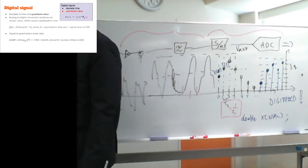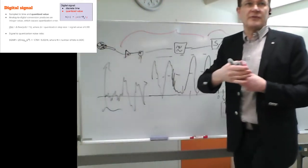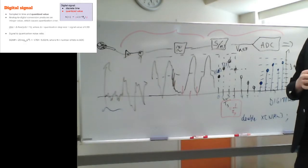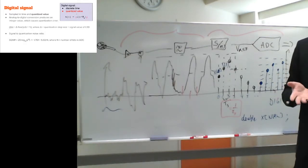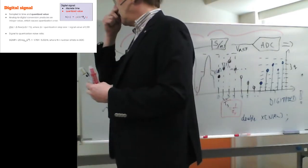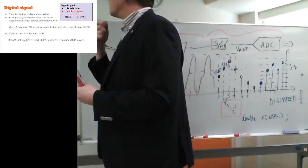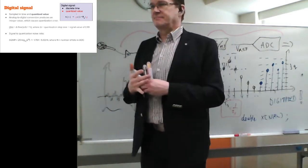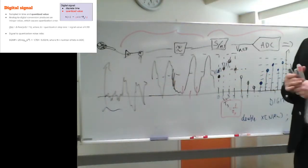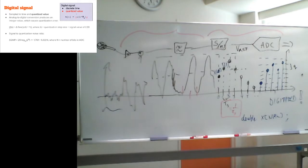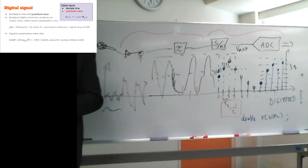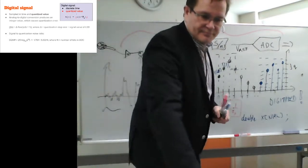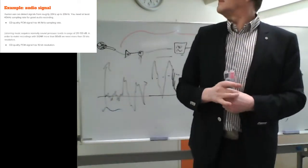The digital signal quantization mathematics looks like that. We are not dealing heavily with quantized noise in this class — if quantization noise is a big issue, you simply add more bits. You need the signal-to-quantization-noise ratio to be better than the signal-to-noise ratio of the original signal.